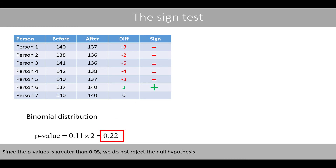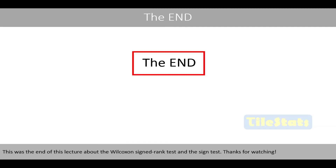Since the p-value is greater than 0.05, we do not reject the null hypothesis. This was the end of this lecture about the Wilcoxon Signed-Rank test and the Sign Test. Thanks for watching.